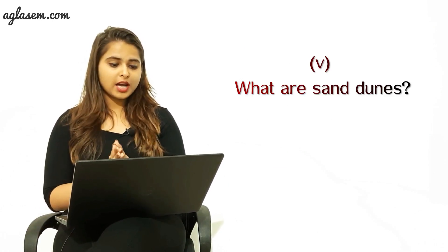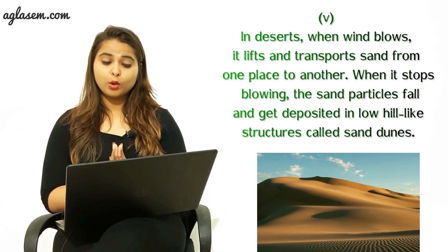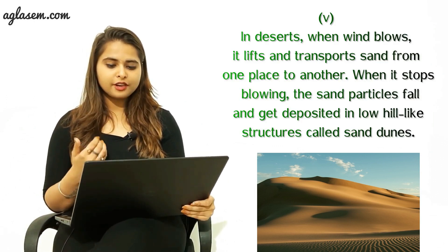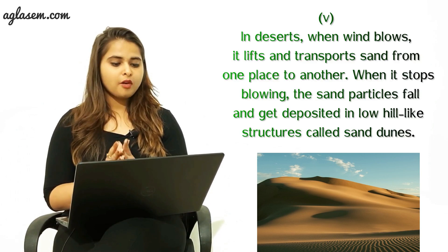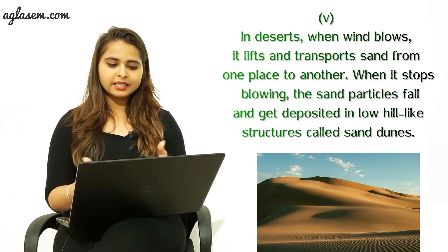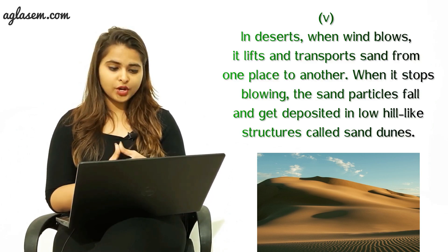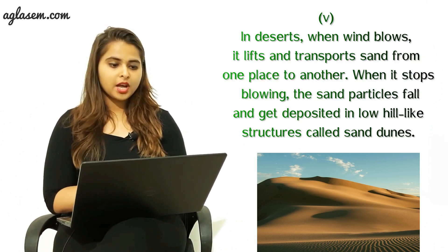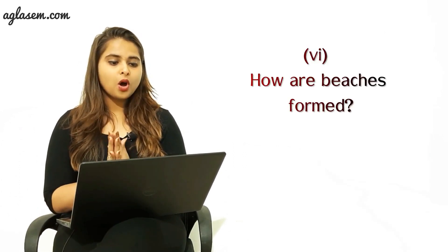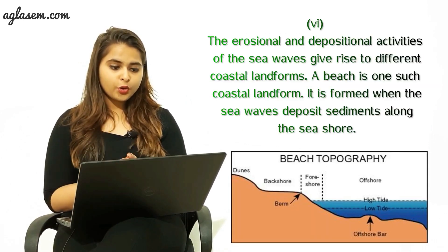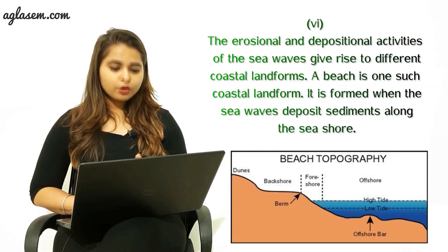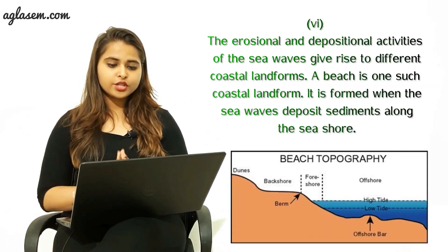The fifth question: what are sand dunes? The answer is: in a desert, when wind blows it lifts and transports sand from one place to another. When it stops blowing, the sand particles fall and get deposited in low hill-like structures called sand dunes.